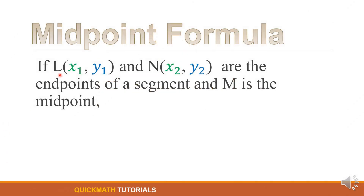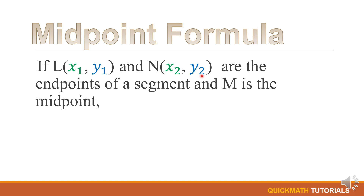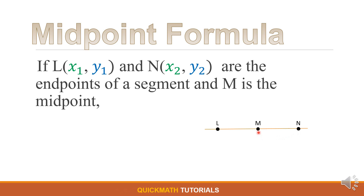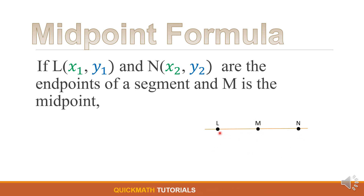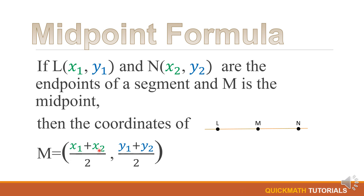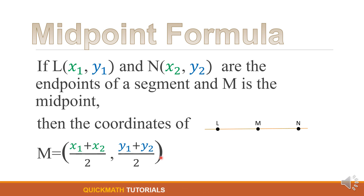If point L is our first point, we have x sub 1 and y sub 1, and point N is our second point, we have x sub 2 and y sub 2 — these are the endpoints of a segment and M is the midpoint. We have here point L, point N, and the midpoint M. When we say midpoint, it is a point that cuts the segment into two equal parts. Therefore, line segment LM is just equal to line segment MN. The coordinates of the midpoint M is equal to open parenthesis x sub 1 plus x sub 2 over 2, comma, y sub 1 plus y sub 2 over 2, close parenthesis.